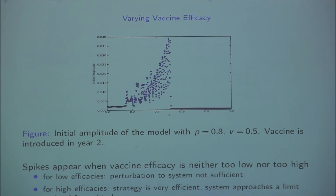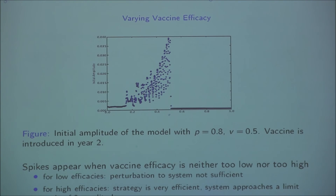Our conclusions about the transient spikes were: first, the appearance of spikes is very sensitive to when the vaccine is introduced; and second, transient spikes appear to be a robust phenomenon as long as vaccine efficacy and vaccination rates are neither too low nor too high.